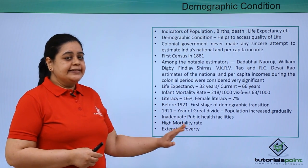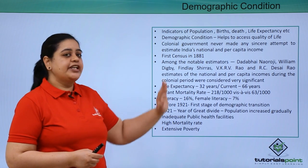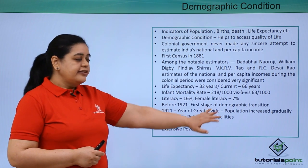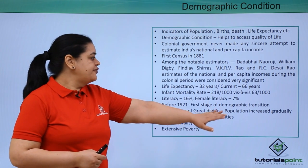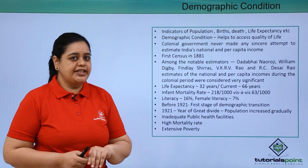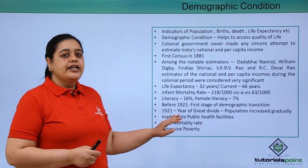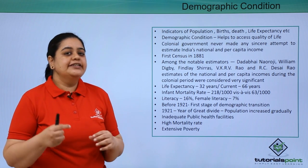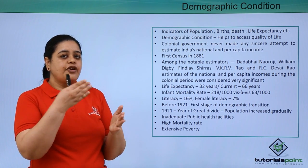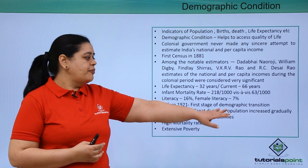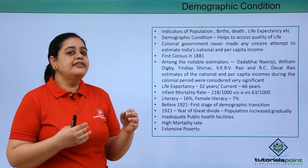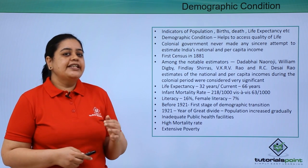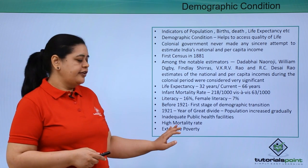From the census data starting in 1881, it was concluded that before 1921 the population was in the first stage of demographic transition. That is the reason 1921 is called the year of Great Divide. From 1921 onwards, the population of India has seen a gradual increase, which is why this year is referred to as the year of Great Divide.